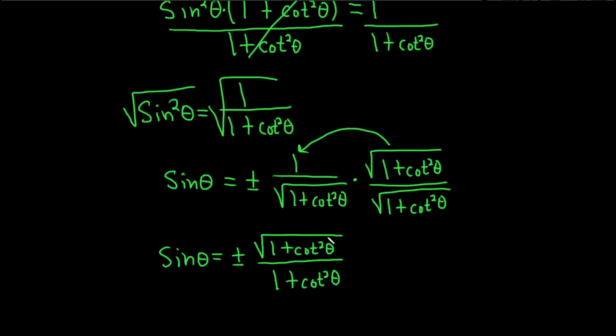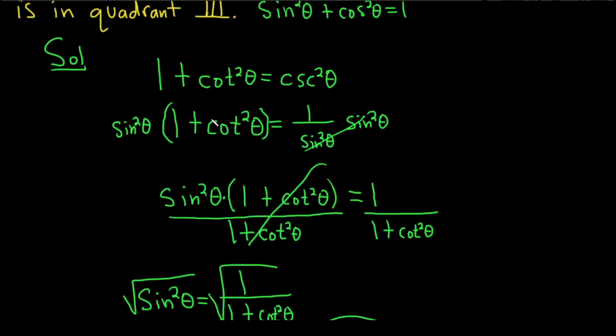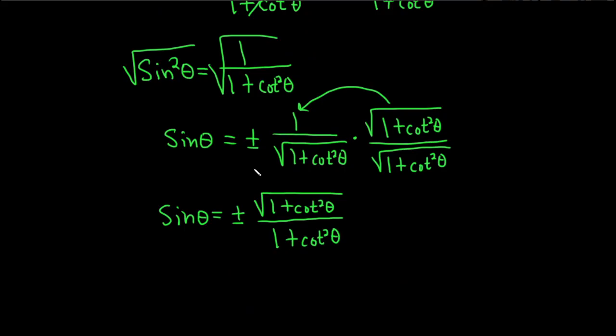Now we need to investigate whether it's plus, minus, or both. We're told θ is in quadrant III. On the unit circle, every ordered pair is of the form (cos θ, sin θ). In particular, sine is the y-coordinate. Because we're in quadrant III, sine is negative. So we want the negative answer only.